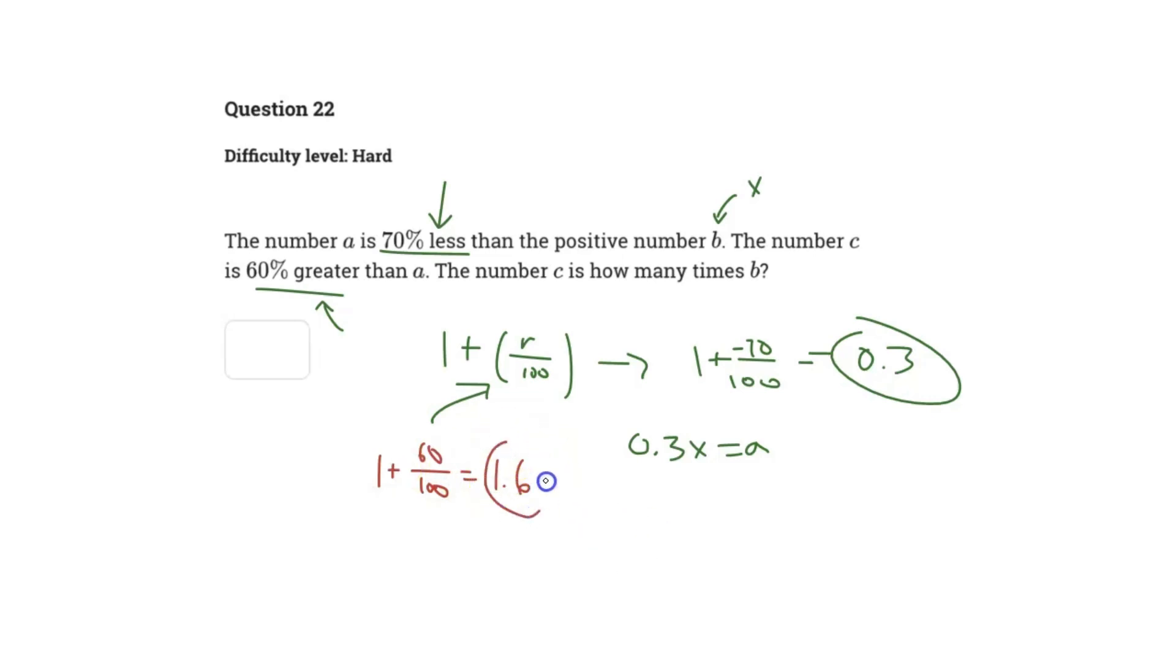This percent multiplier of 1.6 is being applied to the value of A, and we know the value of A is 0.3x. So by simple substitution, we get 1.6 times 0.3 times x.